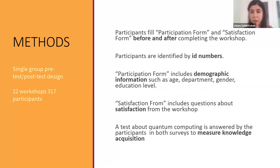To assess the effectiveness of this approach, we conducted experiments with 317 participants from 22 workshops. Those workshops were not online, they were on-site workshops taking either two or three days. Before the workshop and after the workshop, participants filled some forms, which we call pre-test and post-test. In both forms, the same questions are asked, and participants are identified by their ID numbers. In this test, they answered some basic questions about quantum computing and quantum programming.